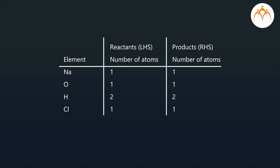Na has one atom and on the product side, it also has one atom. On the reactant side as well as the product side, O has one atom.